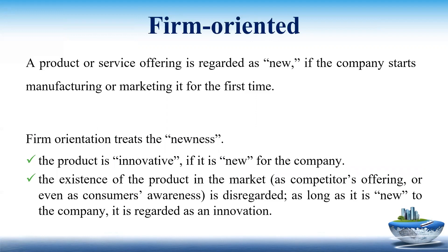The first one is firm oriented. A product or service is regarded as new if the company starts manufacturing or marketing it for the first time. Firm orientation treats the product as innovative if it is new for the company — new in terms of manufacturing or marketing. The existence of the product in the market as a competitor's offering, or even the consumer's awareness, is disregarded. As long as it is new to the company, it is regarded as an innovation.